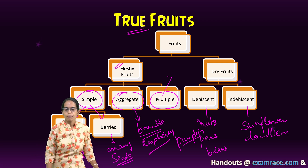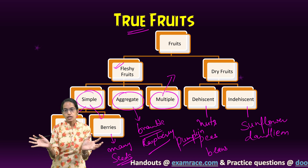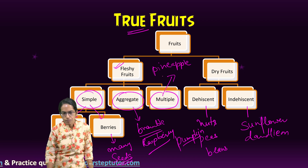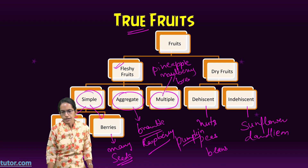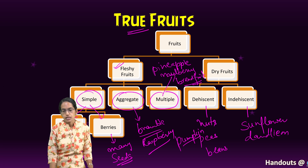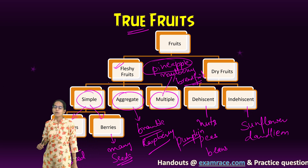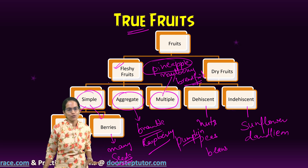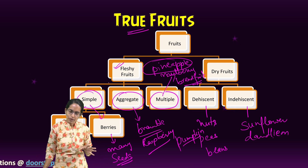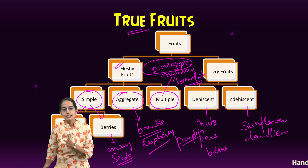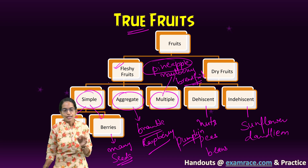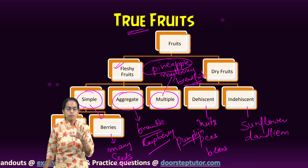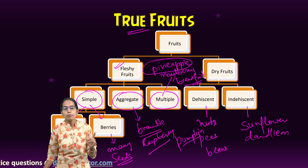Multiple fruits are unique — here, many flowers combine to form one mass. Pineapple is an excellent example; besides pineapple, we have mulberry and breadfruit. Pineapple is especially interesting: there are around 200 flowers that combine to form one fruit. It is native to regions of South America and slowly moved to other areas, becoming a major plantation crop. More than 200 flowers combine to form one pineapple fruit.